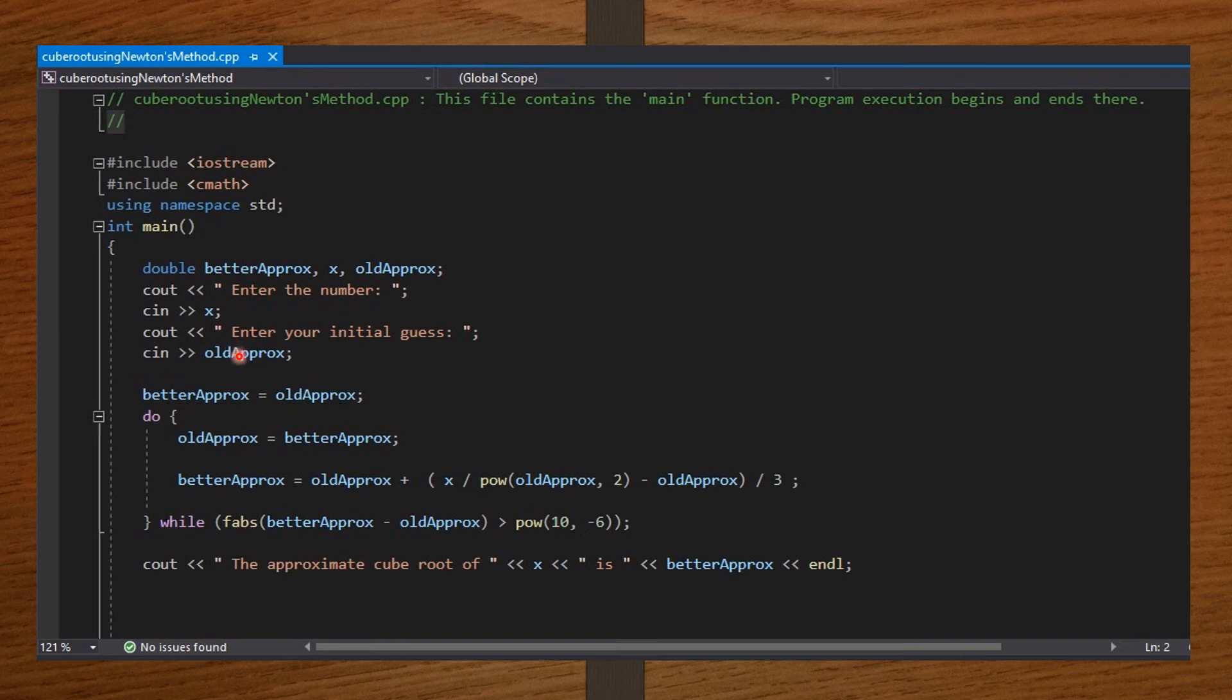Then I equate betterApprox to oldApprox. Then inside the do-while loop I do my computations so the difference approaches one in a million, at which point betterApprox will contain the approximate cube root of x. Then from there I print the value to see the approximate cube root of x is betterApprox. Then I end the code with system pause, return zero.